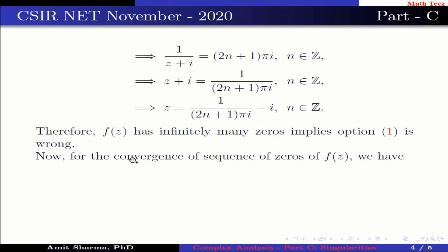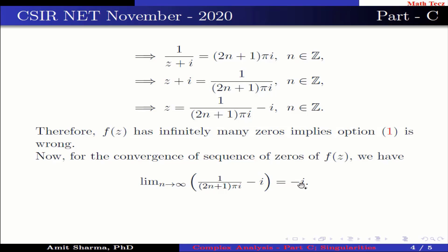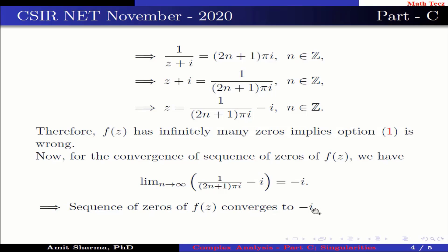Now for the convergence of the sequence of zeros of f(z), we have the limit as n approaches infinity of 1 upon (2n + 1)πi minus iota, which equals minus iota. This implies the sequence of zeros of f(z) converges to minus iota.